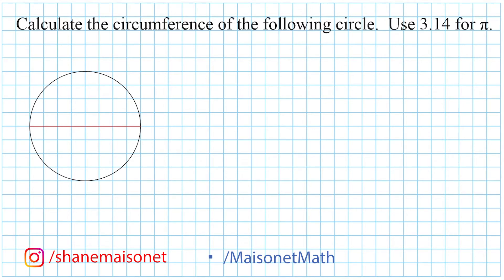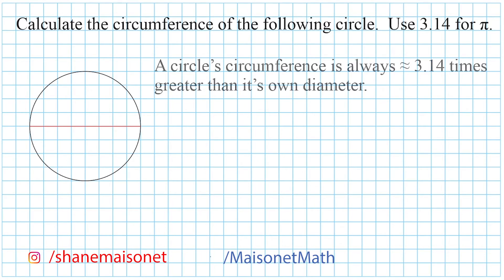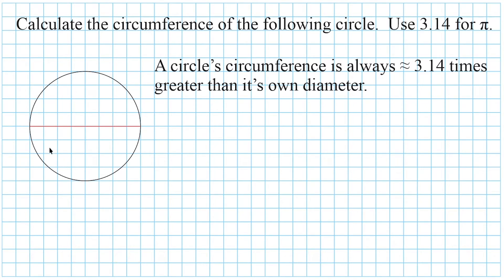This problem wants us to calculate the circumference of this circle using 3.14 for pi. The circumference of a circle is just the distance around a circle — that is really just the perimeter of a circle. One thing we should understand about a circle's circumference is that it is always 3.14 times greater than its own diameter.